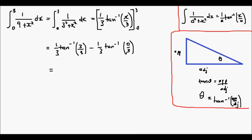So in evaluating the inverse tan of 3 over 3, the adjacent side and the opposite side are equal to each other so therefore the angle must be 45 degrees, or 45 degrees is equal to pi over 4.